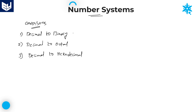Let us look at the first conversion: decimal to binary. I will take small examples to explain all three conversions. Try to understand how to convert any decimal number into a binary, octal, or hexadecimal number. In the next session I will take larger numbers so you can better understand the conversions.